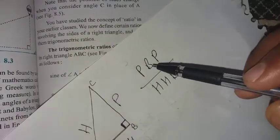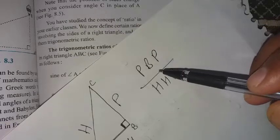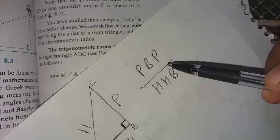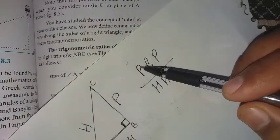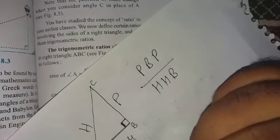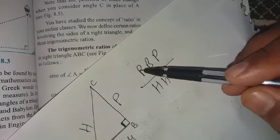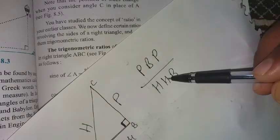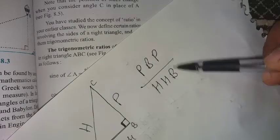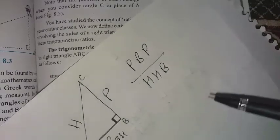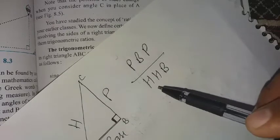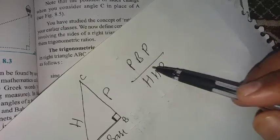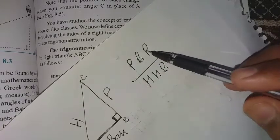We have mainly six ratios: sine, cos, tan, cosec, sec, cot. Sine of angle is P upon H, means perpendicular upon hypotenuse. Cos is B upon H, base upon hypotenuse. Tan is perpendicular upon base, P upon B. After this we have cosec H upon P, sec H upon B, and cot B upon P.